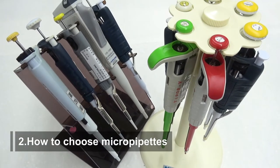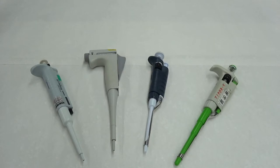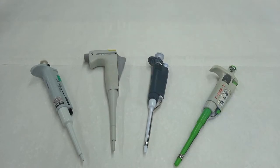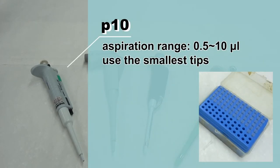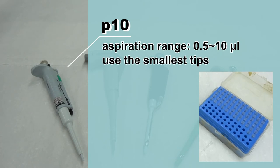How to choose micropipettes: Regular micropipettes include four types. The P10 has an aspiration range of 0.5 to 10 microliters and uses the smallest tips.